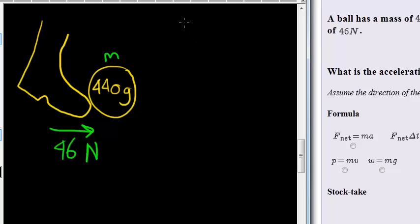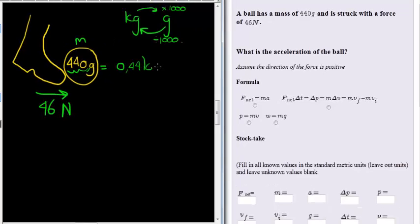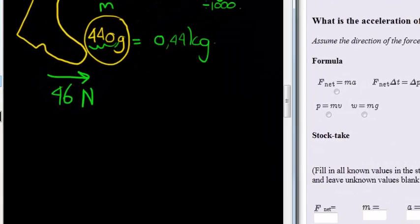We need it in kilograms. To go from kilograms to grams I would have multiplied with a thousand, and to go from grams to kilograms I will divide with a thousand. Which means that this in kilograms, I need to move the comma three spaces to the left so I get 0.44 kilograms. I need the correct units.